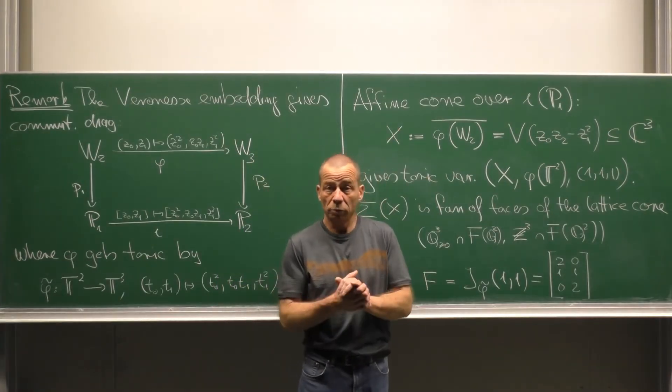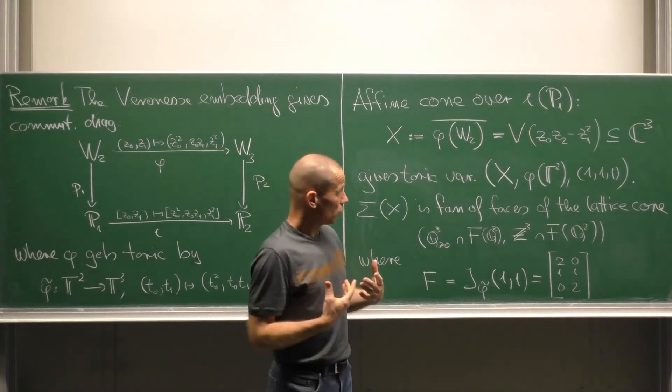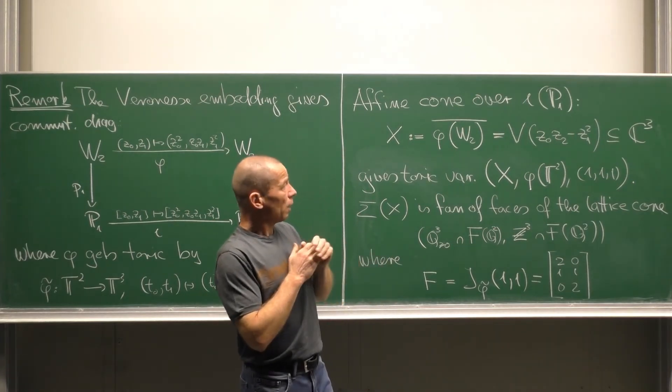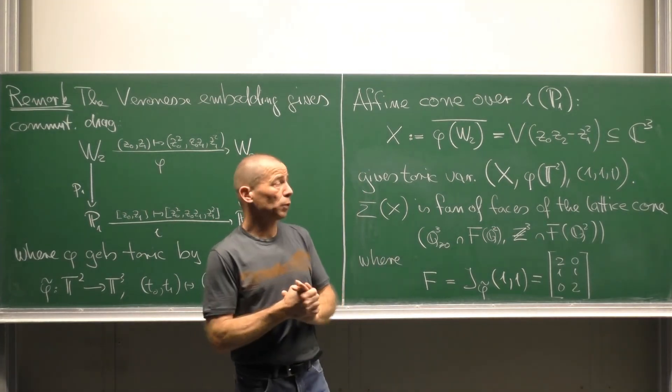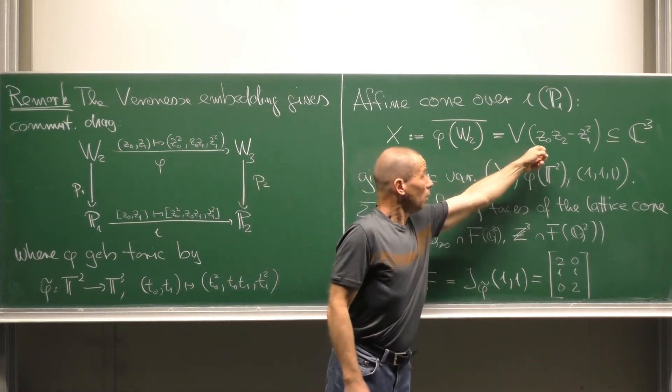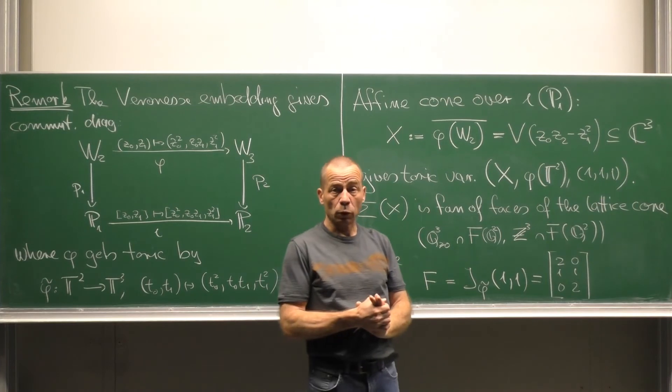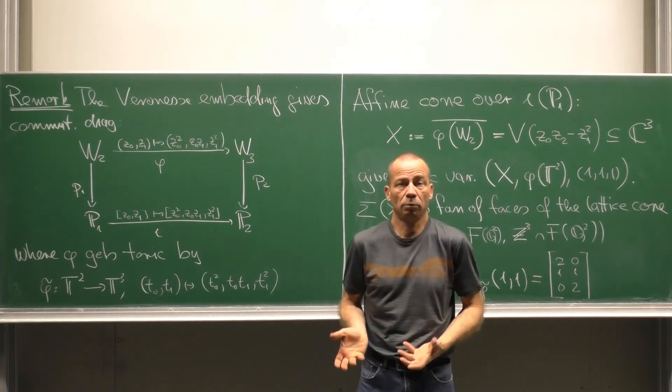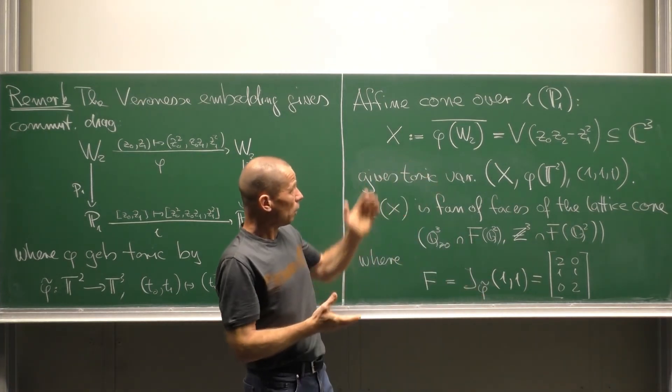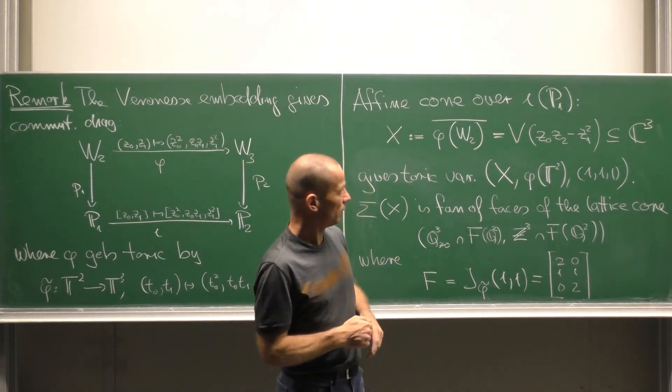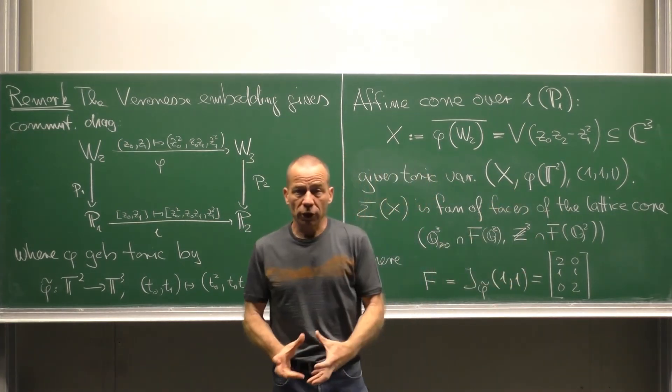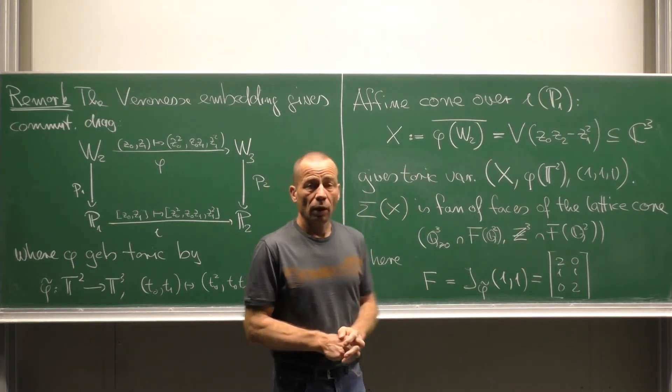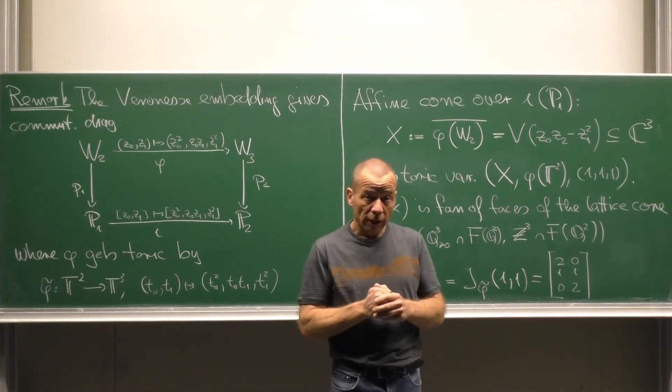The affine cone over the embedded P¹ is by definition the closure of the image of the lifting embedding map. This is a surface X which has defining equation Z₀ times Z₂ minus Z₁ square. This equation is directly verified by plugging in the image points. Now our X is also a toric variety. It has as acting torus the homomorphic image of T² and base point (1,1,1).